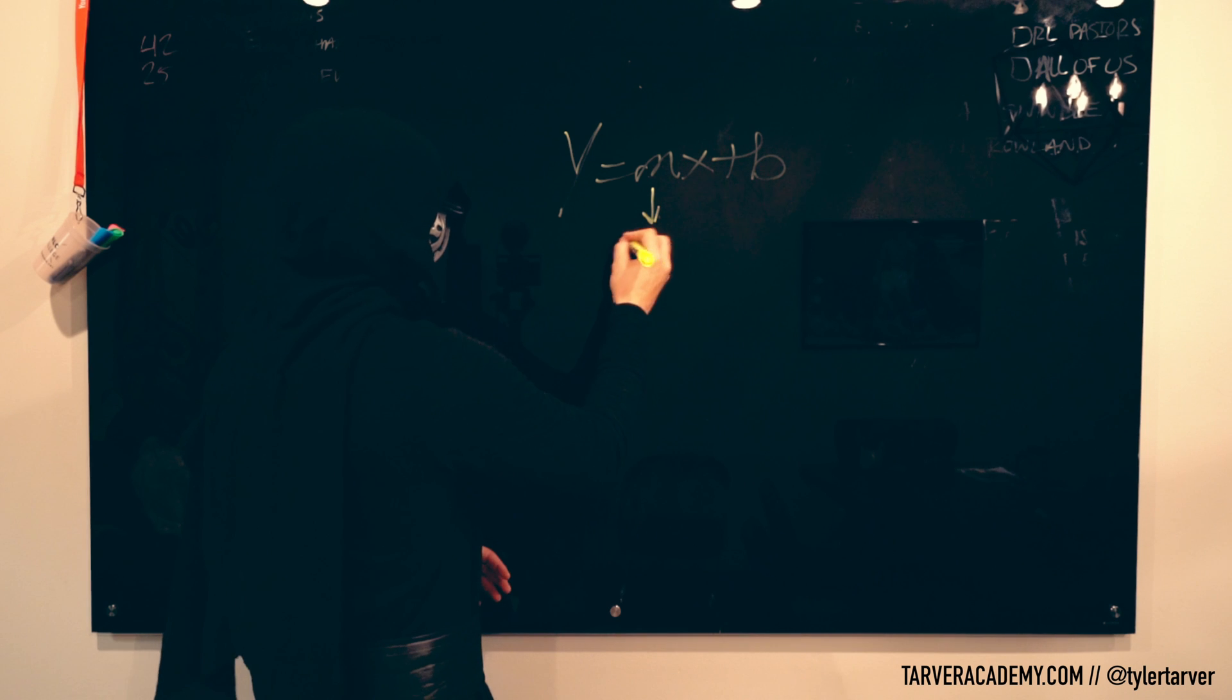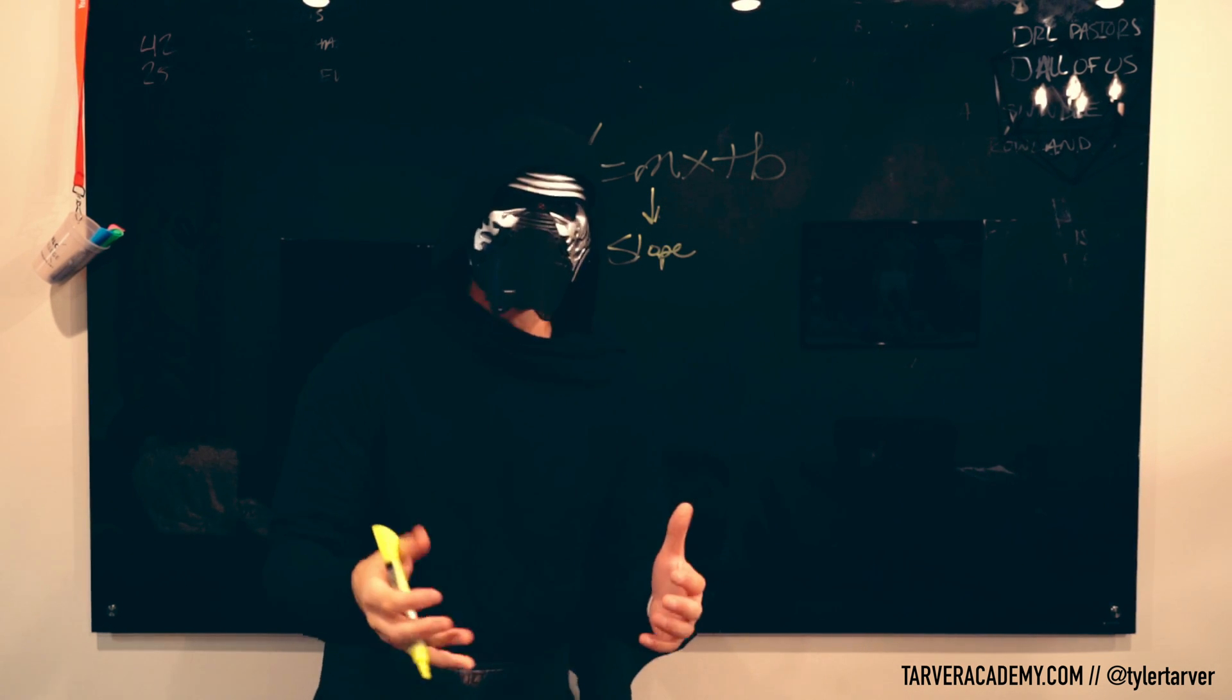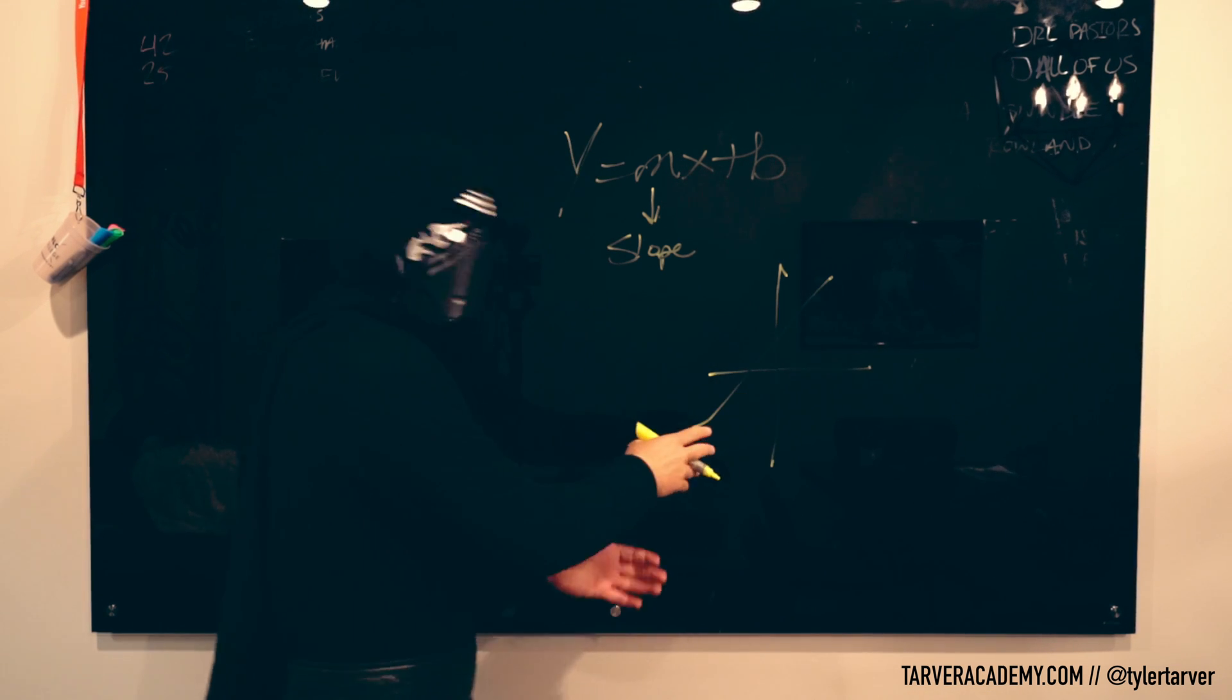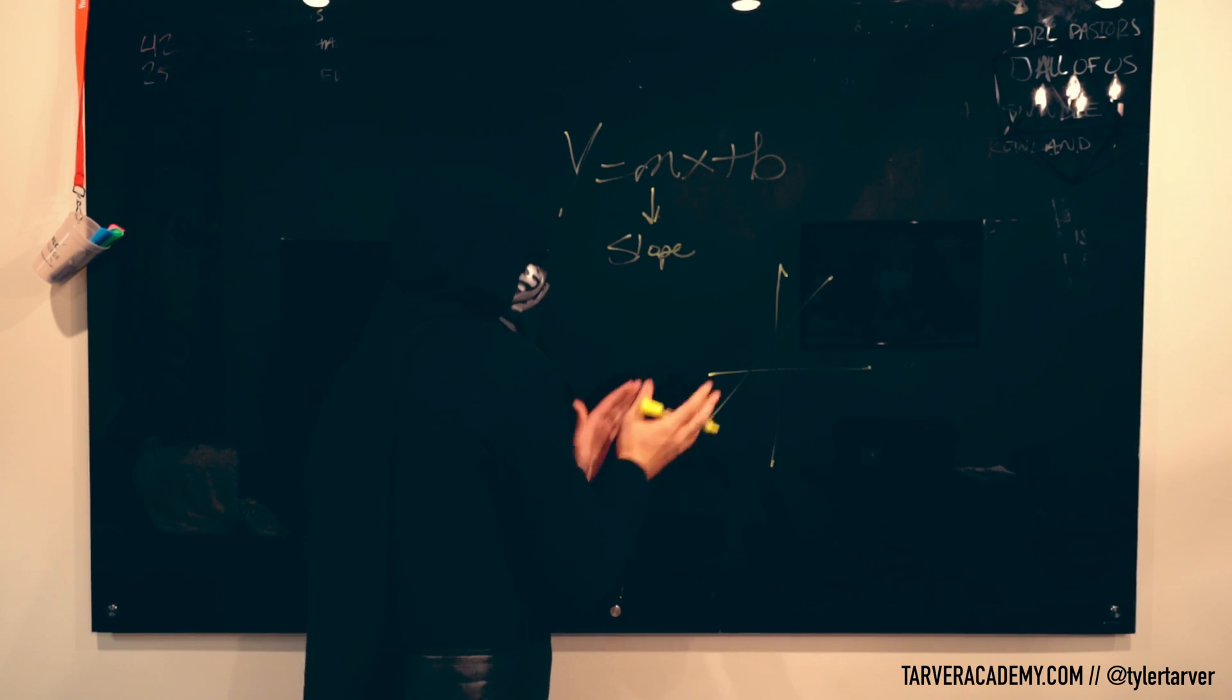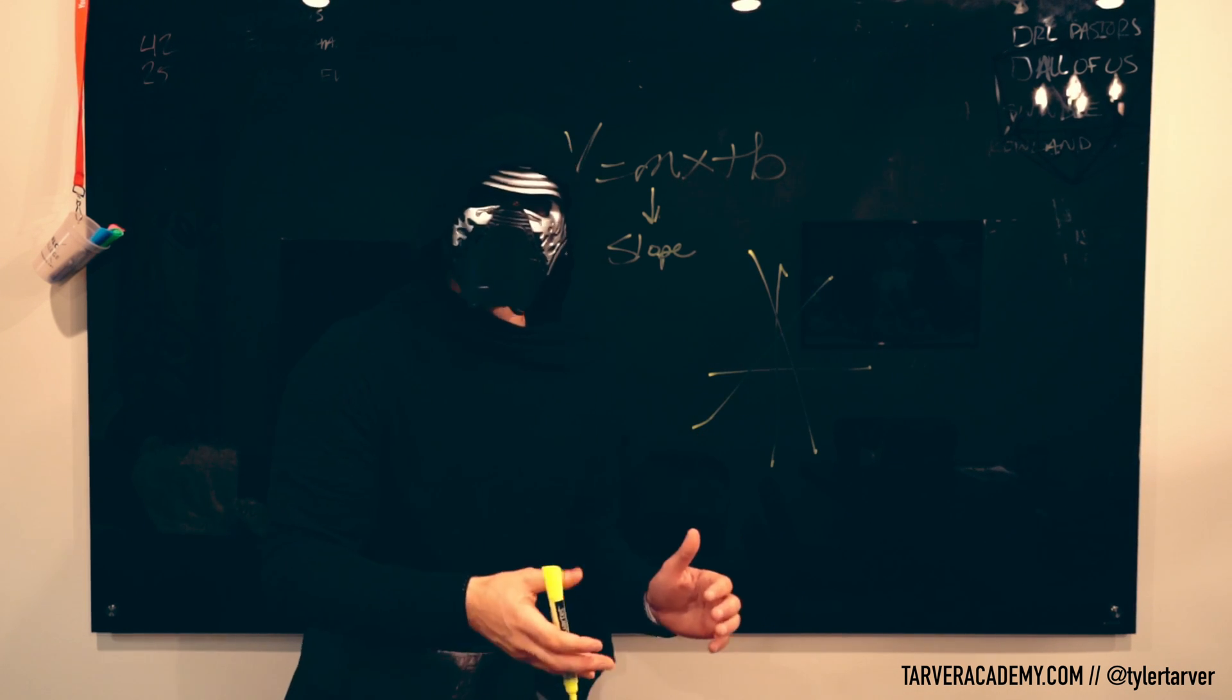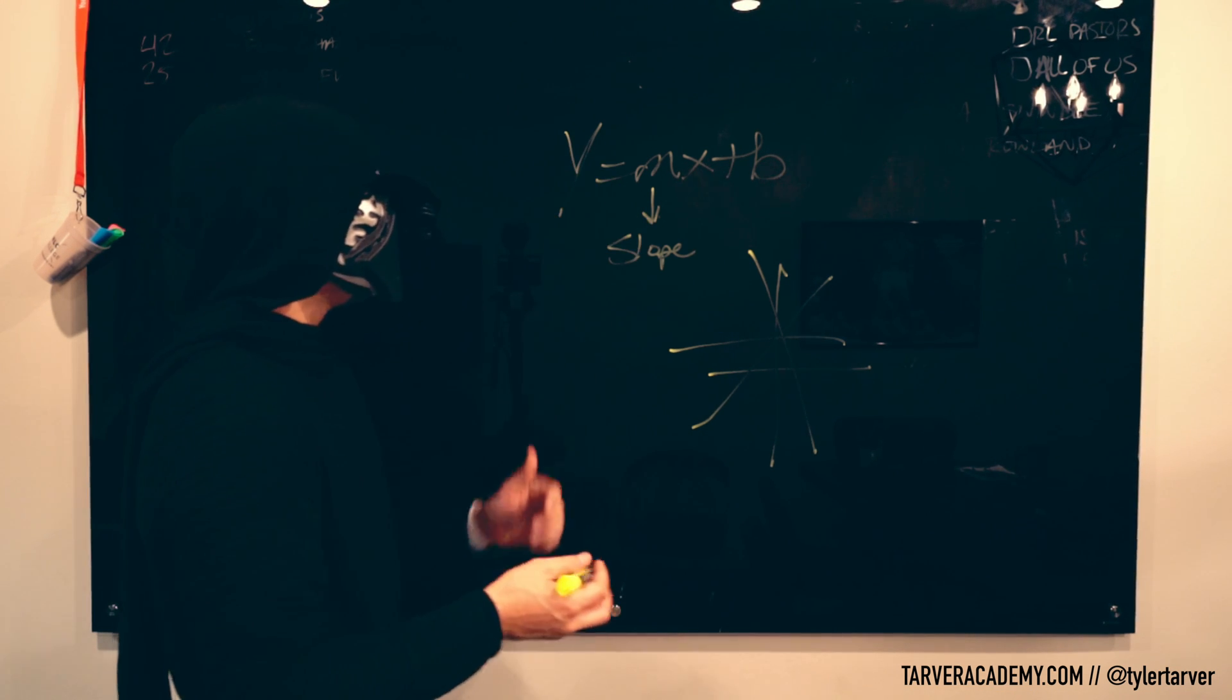M is your slope. That's the rate of change of your line. So when you have a line, your slope is how fast or how steep it's going up or how steep it's going down, or the lack of steepness overall. So that's our m.